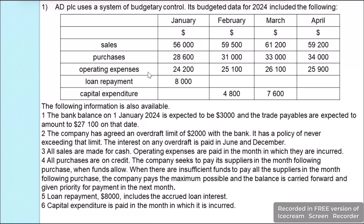Operating expenses are $24,200, $25,100, $26,100 and $25,900. Loan repayments are $8,000 in the month of January, and we have capital expenditures in February of $4,800 and in March $7,600.